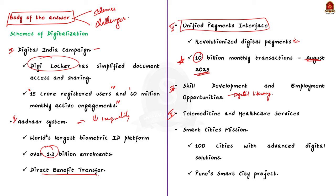Fifth, telemedicine and healthcare services — the Digital India program includes initiatives to improve healthcare services through telemedicine and other online health platforms, particularly beneficial for individuals in remote areas with limited access to healthcare facilities, helping reduce health-related inequalities. Lastly, the Smart City Mission envisions the development of 100 cities with advanced digital solutions. For example, Pune's Smart City project focuses on enhancing urban mobility and solid waste management. These developments imply India's commitment to digital transformation.